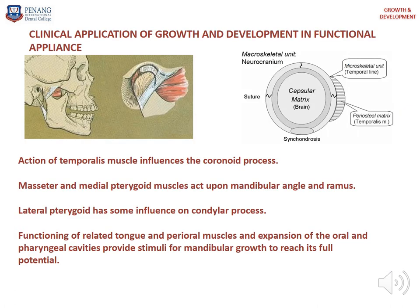Now, the clinical application of growth and development in functional appliance. A functional appliance is used in growth modification treatment for patients with a Class II skeletal base. When we place a functional appliance, we force the mandible to move forward, which influences the muscles — they become tense and release signals. The action of the temporalis muscle influences the coronoid process; masseter and medial pterygoid muscles act upon the mandible angle and ramus; and the lateral pterygoid has influence on the condylar process. Functioning of related tongue and perioral muscles and expansion of oral and pharyngeal cavities provide stimulation for mandibular growth to reach its full potential.